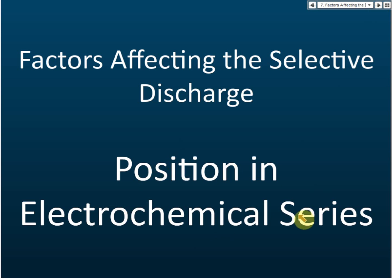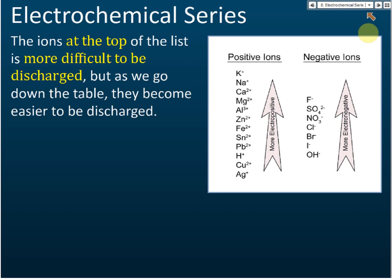How does position in the electrochemical series affect selective discharge? First, we need to know what the electrochemical series is. In SBM, there are two electrochemical series you need to know — there are more ions than this in the full series, but for SBM this is sufficient. The electrochemical series is a list of ions arranged according to their tendency to receive or release electrons. This one is for positive ions, and this one is for negative ions.